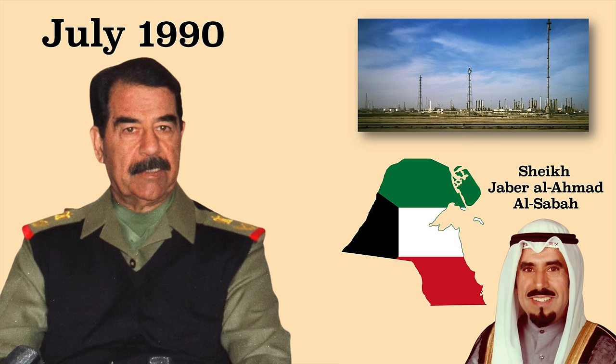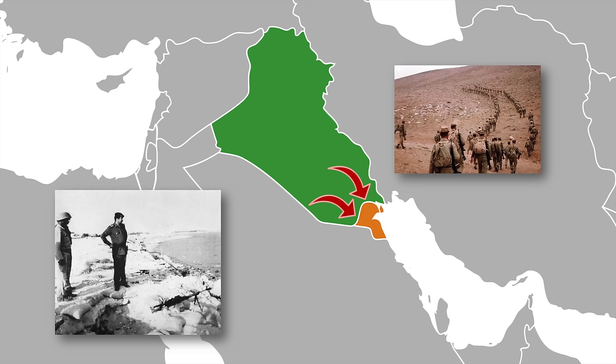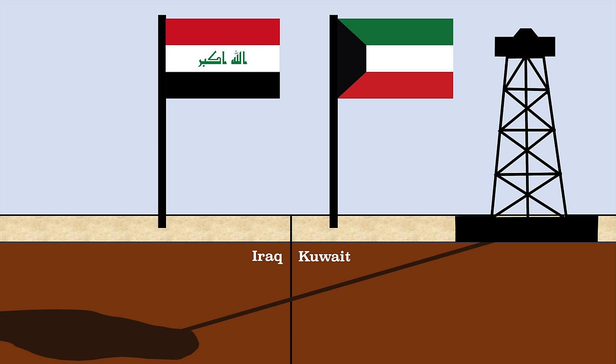In July 1990, Saddam ramped up his trash talking about Kuwait and said if their government continued to disrespect the oil production quota, Iraq would take military action. Soon after this, Saddam sent 30,000 troops to the Iraq-Kuwait border. But this was about more than oil. Saddam was also hoping to make Iraq great again through gaining territory that once was kind of part of Iraq. Before the British came in and drew up borders of the Middle East, modern-day Iraq and Kuwait used to be part of the same territory within the Ottoman Empire. Thus, Saddam and others in the Iraqi government thought that Kuwait ought to be part of Iraq. On July 26, 1990, Kuwait announced that it would limit its oil production.